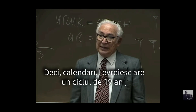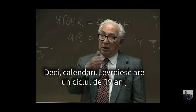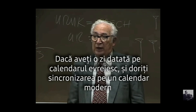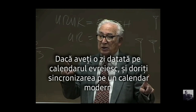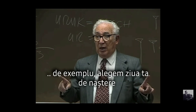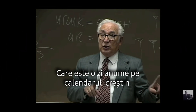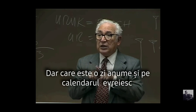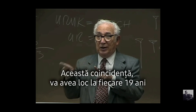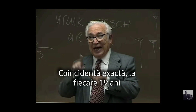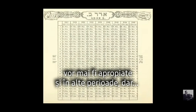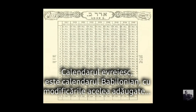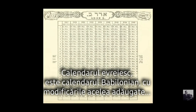The Jewish calendar has a 19-year cycle. If you have a date on the Jewish calendar that corresponds to a date on the English calendar — say your birth date was a certain date on the Christian calendar which was a certain date on the Jewish calendar — that coincidence will happen every 19 years exactly. It'll be close in other periods, but the Jewish calendar is the Babylonian calendar with added modifications.